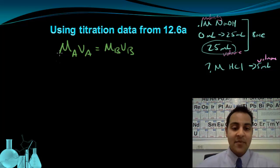The left side of the equation has Ma times Va. That's the molarity of the acid, the concentration of the acid, times the volume of the acid. The right side of the equation has Mb and Vb. That's the molarity of the base and the volume of the base. And now I simply plug in the information I have into this equation.